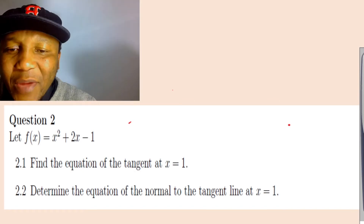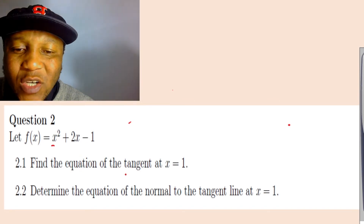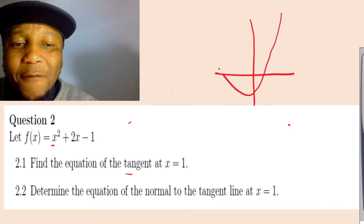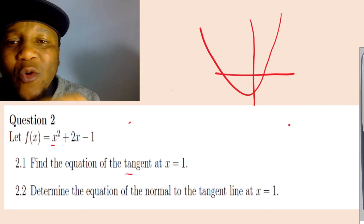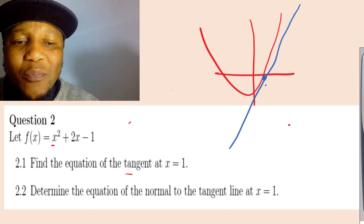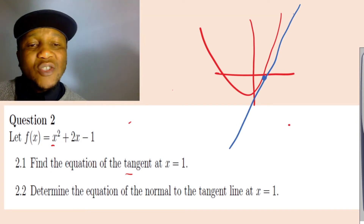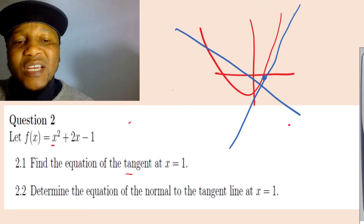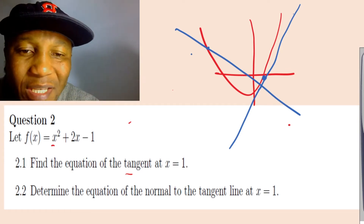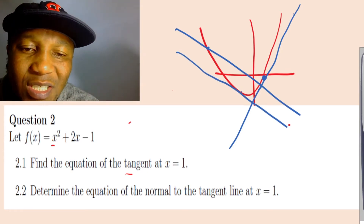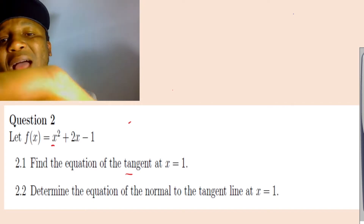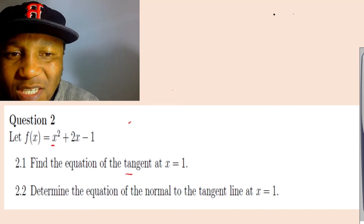We have a quadratic x squared plus 2x minus 1 — find the equation of a tangent. A tangent is the line which touches the graph at only one point. For example, if a line cuts at two points it is not a tangent, but if it touches at only one point it is a tangent. Let me do a rough sketch to help simplify things.